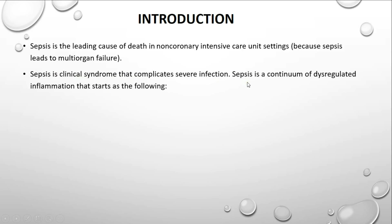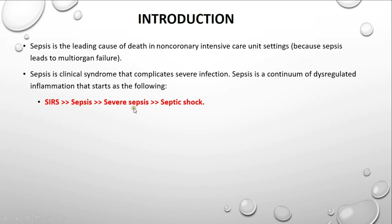Sepsis is actually a continuum of dysregulated inflammation that starts as the following: it starts first as SIRS, which is Systemic Inflammatory Response Syndrome, which goes to sepsis, then to severe sepsis, and finally ends up in septic shock.